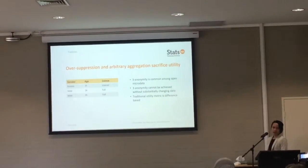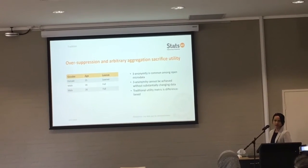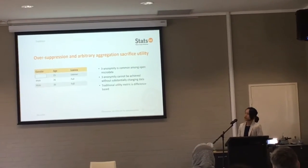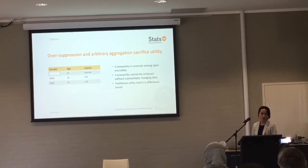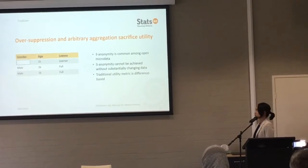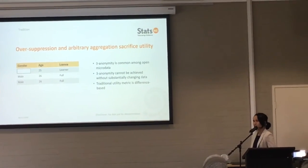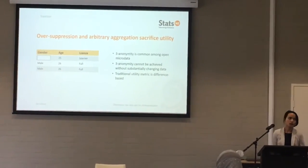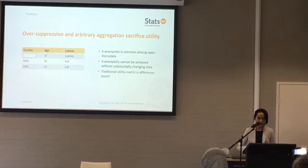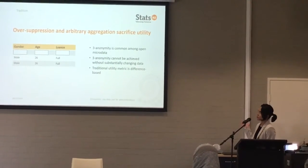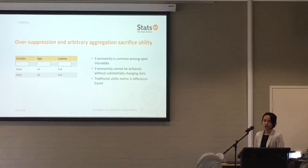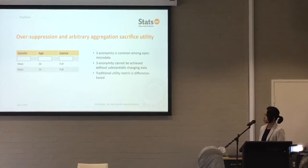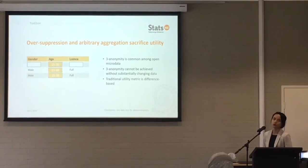Now that we know how we judge whether a dataset is safe, how can we make it safe? Traditionally, the first method is called suppression. For example, you delete the gender information so that a hacker cannot be sure whether a record is male or female. But if you only rely on suppression, there's a very easy-to-see problem — you can basically wipe out the quasi-IDs of the entire first record.